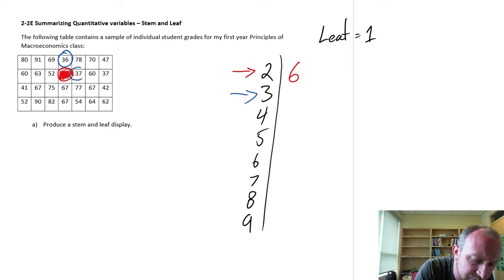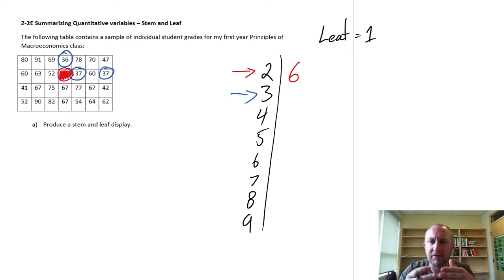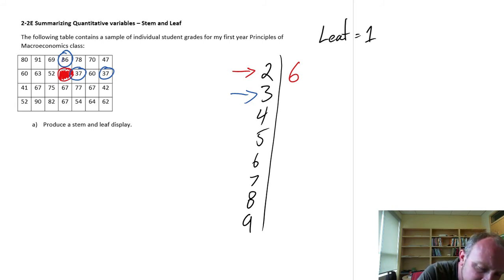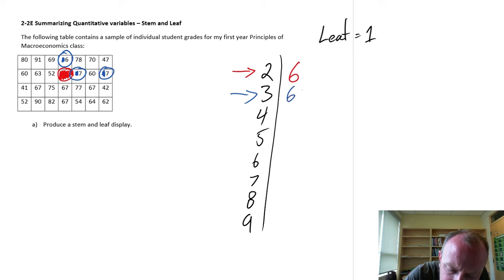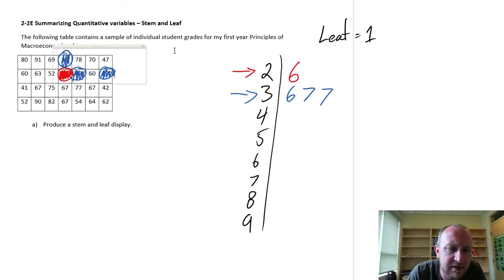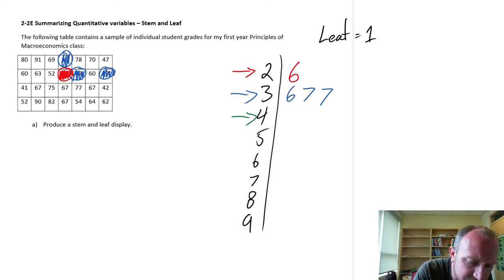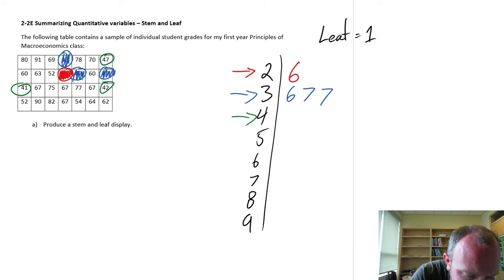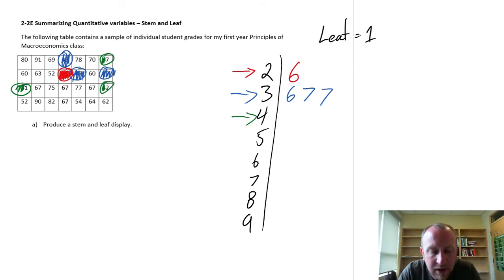Going through the data set for stem 3, I find 36, 37, and 37. So I have multiple values. The leaves go in order from smallest to largest. Ignoring the stems, I have a 6 and two 7s, so I write: 6, 7, 7. Now for stem 4, I find 47, 41, and 42. Ignoring the stem values, the leaves in order are 1, 2, and 7.